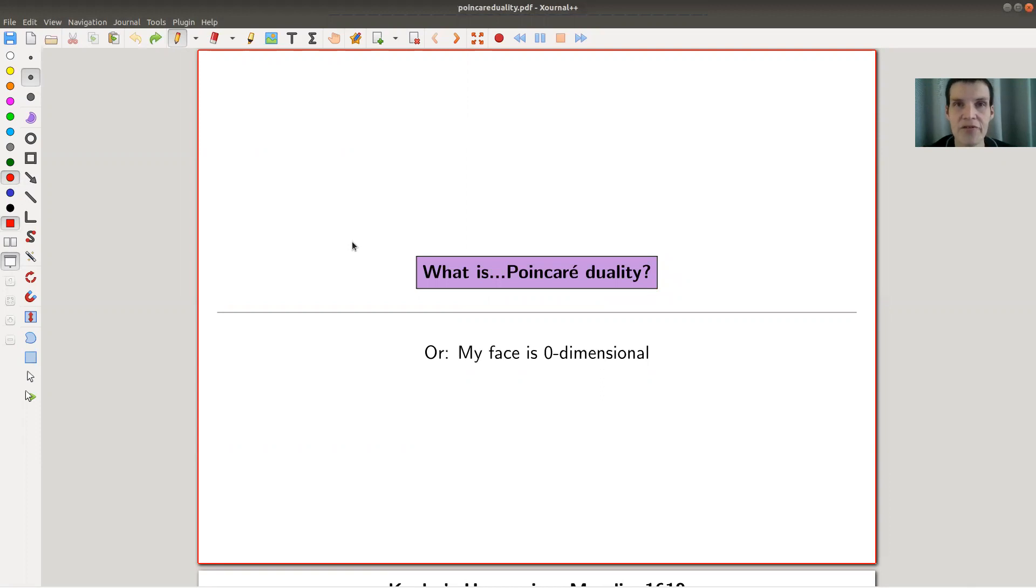Okay, welcome everyone to my continuation of what is algebraic topology. Today's topic is one of the most important and sometimes one of the most surprising dualities that you will see in topology. It's called Poincaré duality. It's a very powerful observation going back to very easy and very old mathematics. We will see what it is actually. In some sense, what I would like to keep in mind is that whatever you see right now, my face actually is a zero-dimensional object, as we will see. But let's get started.